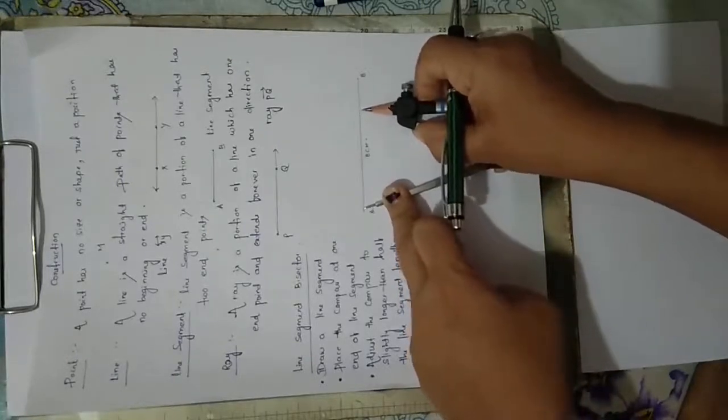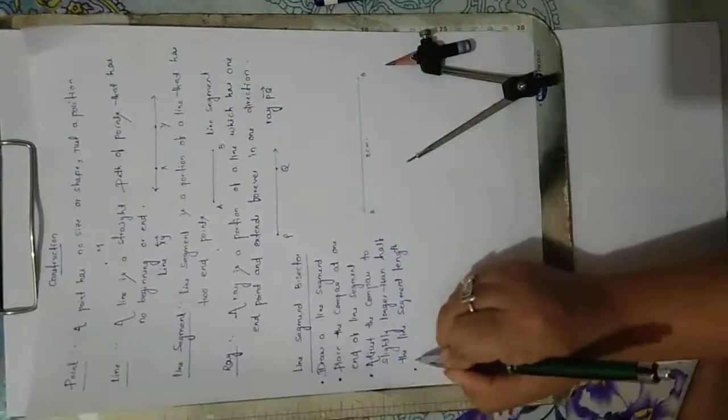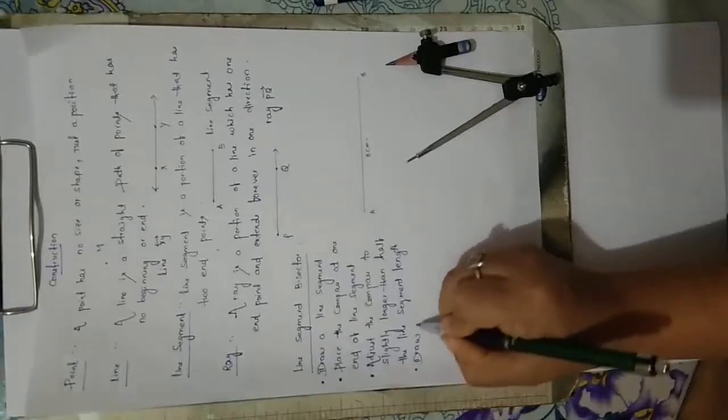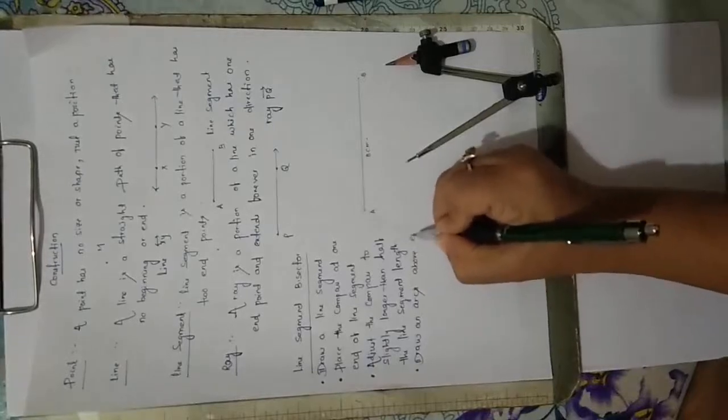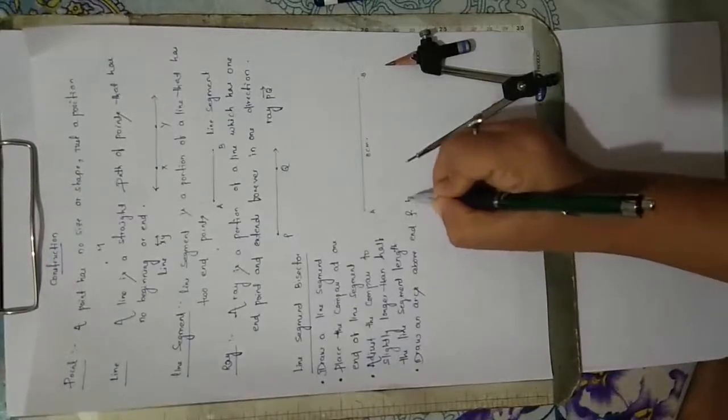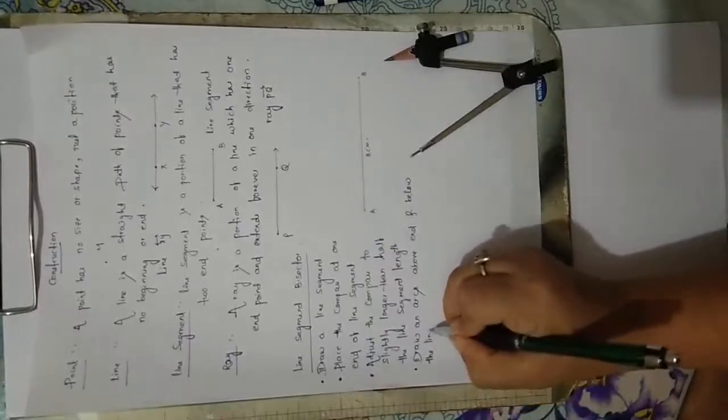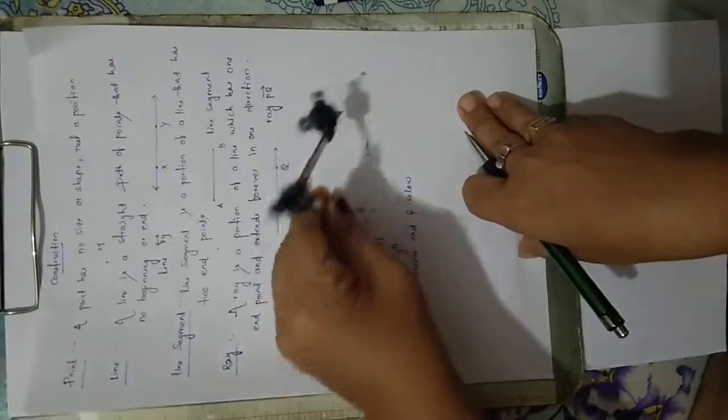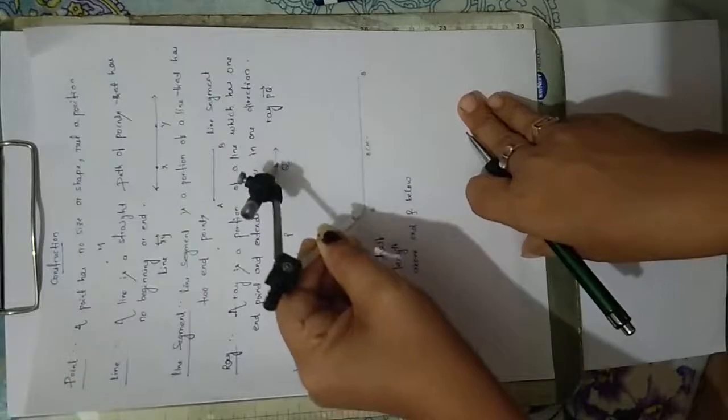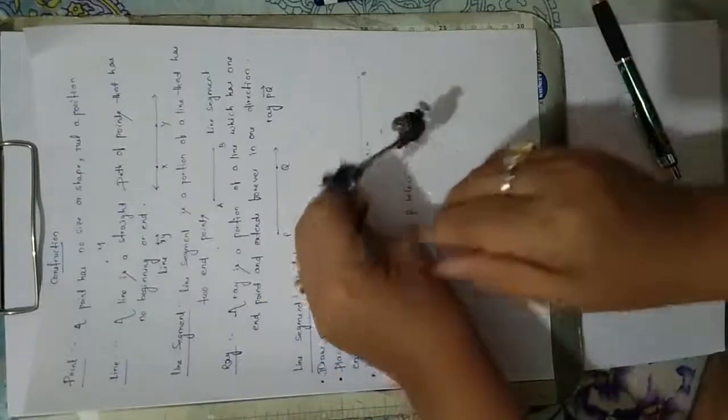Fourth step: draw an arc above and below the line. Above the line and below the line, draw an arc. Right now I am taking more than half. After that I will put a mark here above and same thing below.